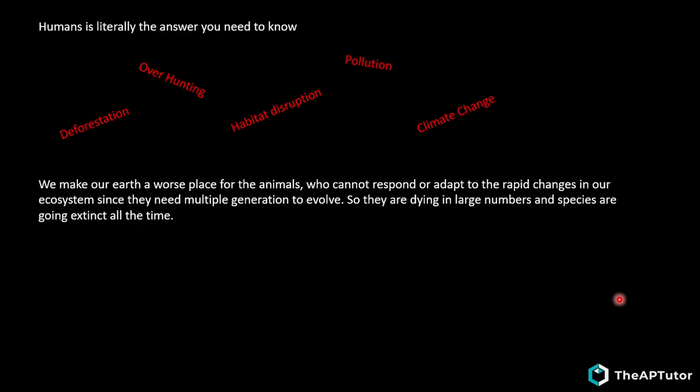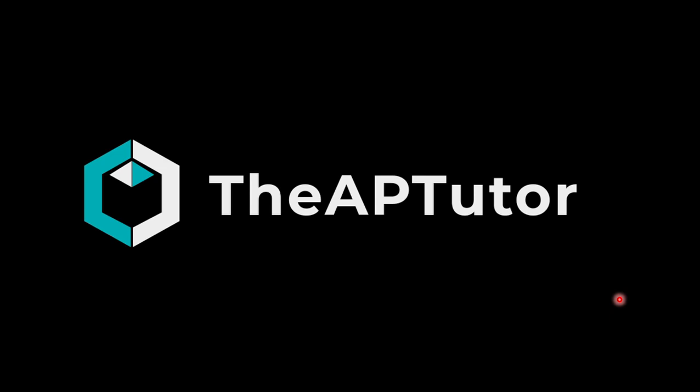Disruptions to ecosystems: humans are the primary answer. Humans cause deforestation, overhunting, habitat disruption, pollution, and climate change, making Earth a worse place for animals that cannot adapt to rapid changes since they need multiple generations to evolve - causing large-scale death and extinction. That's all for Unit 8. It's been a pleasure going through this entire review. If you have any questions, leave them in the comments below, and please subscribe.